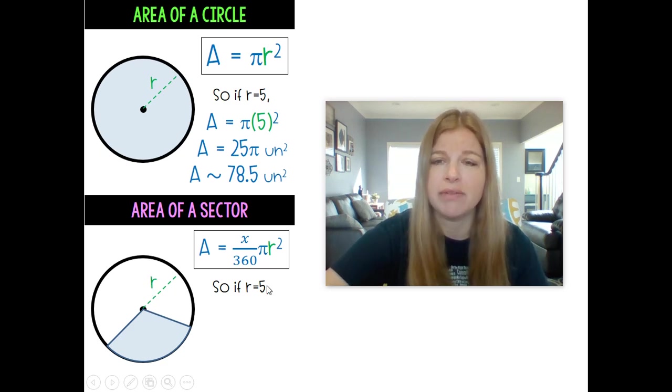And once I have that radius 5, I don't know the area of the entire circle, I just want to know this portion. But what I need to know is what is the central angle of this sector? And so here's what the formula looks like: it's got the pi r squared in it, but it's got x over 360, and x represents whatever this angle measure is.